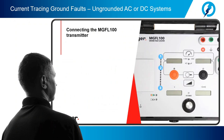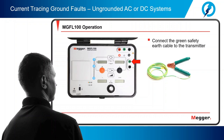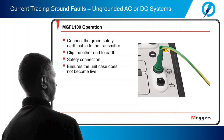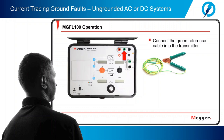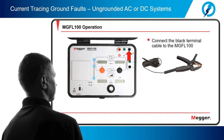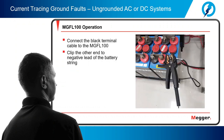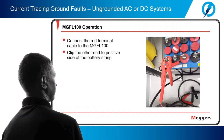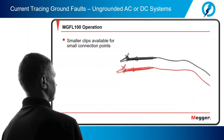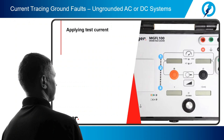Now we are ready to connect the MGFL-100. First, plug the green safety earth cable into the transmitter and clip the other end to earth — a conduit is a good connection. This is a safety connection that ensures if anything fails in the unit, the case does not become live. Next, plug the green reference cable into the transmitter and clip the other end to earth. Plug the black terminal cable into the MGFL-100 and clip the other end to the negative lead of the battery string. Plug the red terminal cable into the MGFL-100 and clip the other end to the positive side of the battery string. The MGFL-100 can be used on battery strings up to 600 volts DC. There are also smaller clips available for small connection points. Now we are ready to apply test current and evaluate the fault.